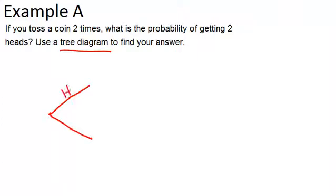You could get heads or you could get tails and the probability of each of those is one half because you're going to get one or the other and there's an equal chance of getting each one. Now after you flip the coin the first time you're going to flip it again.